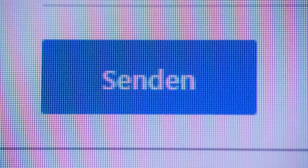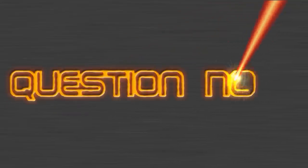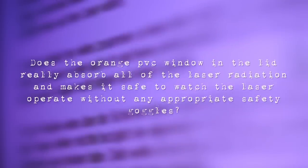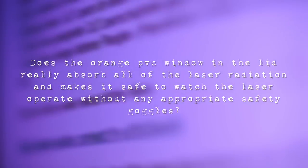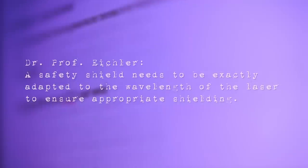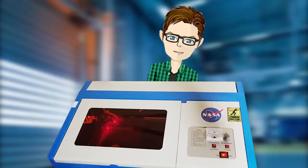Without any further ado, let's get started with an obvious question. Does the orange PVC window in the lid really filter out all of the laser radiation and makes it safe to watch the laser operating without any appropriate safety goggles? Professor Eichler says a safety shield needs to be exactly adapted to the wavelength of the laser to ensure appropriate shielding. What does that mean for us hobbyist laser freaks?